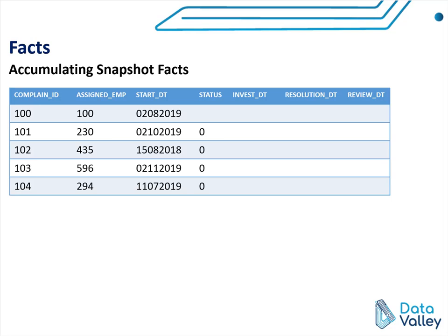Another type of fact table is accumulating snapshot facts. This kind of table is suitable for cases where you want to track a process end-to-end and monitor the change of the process or process status step-by-step.